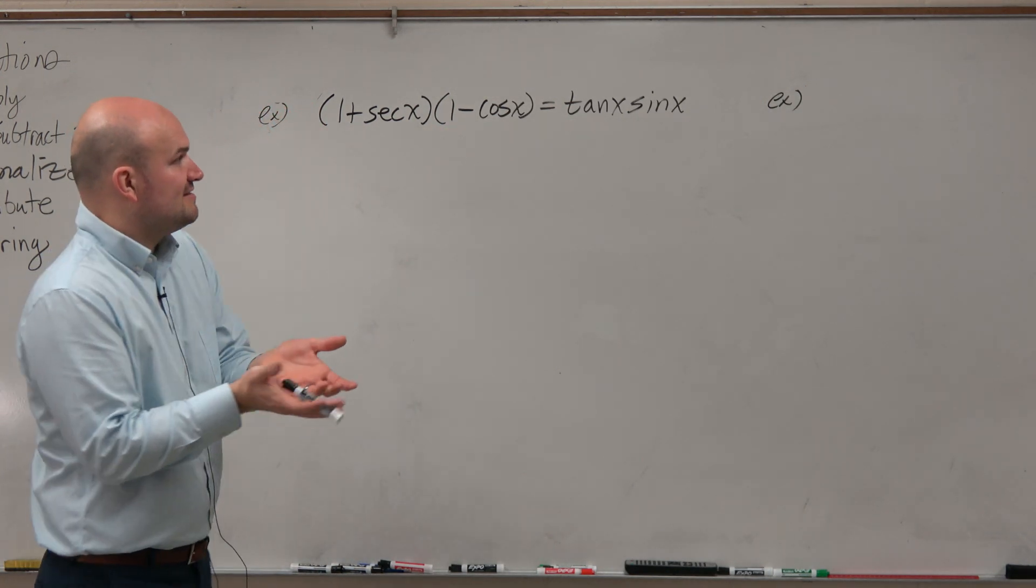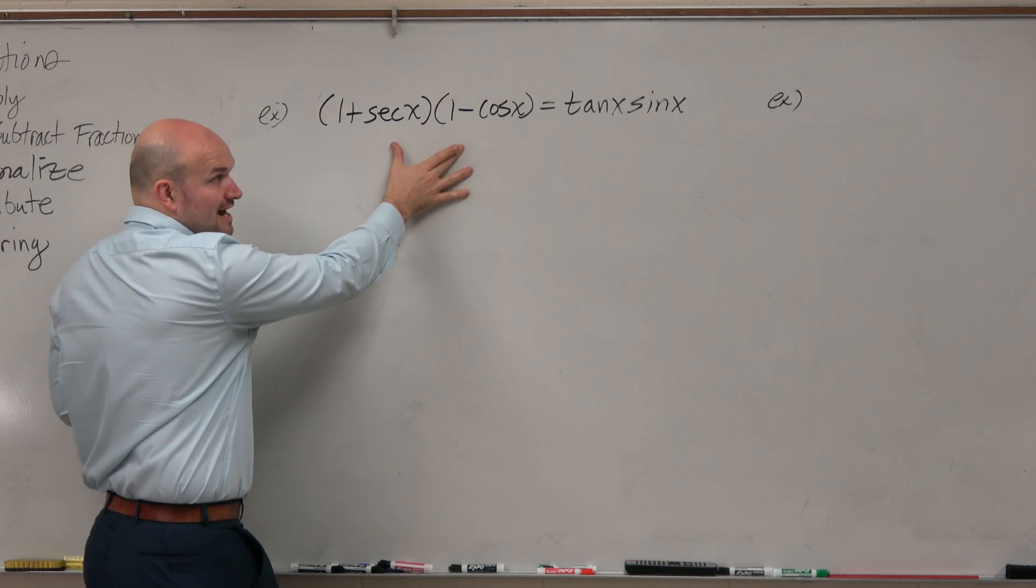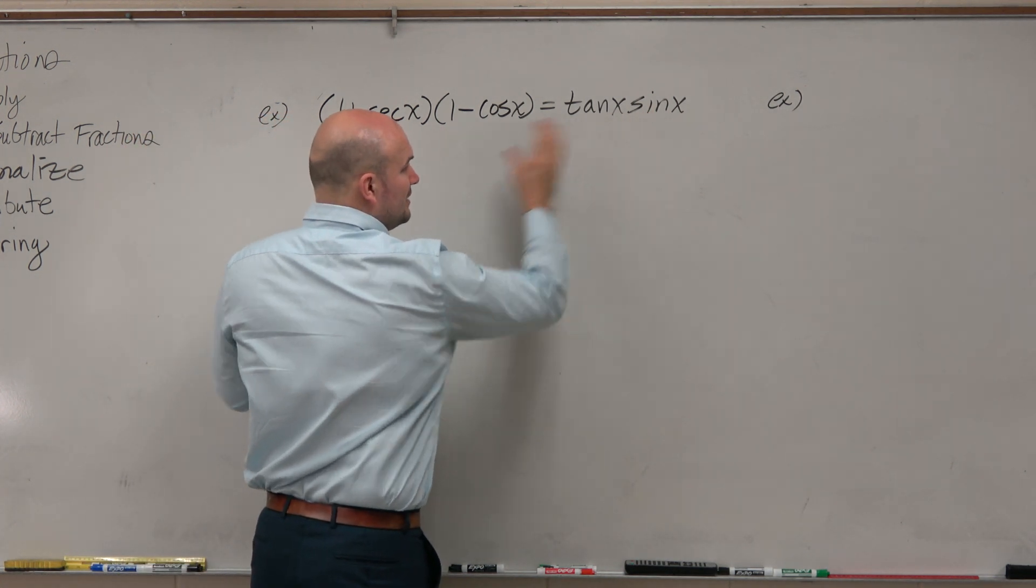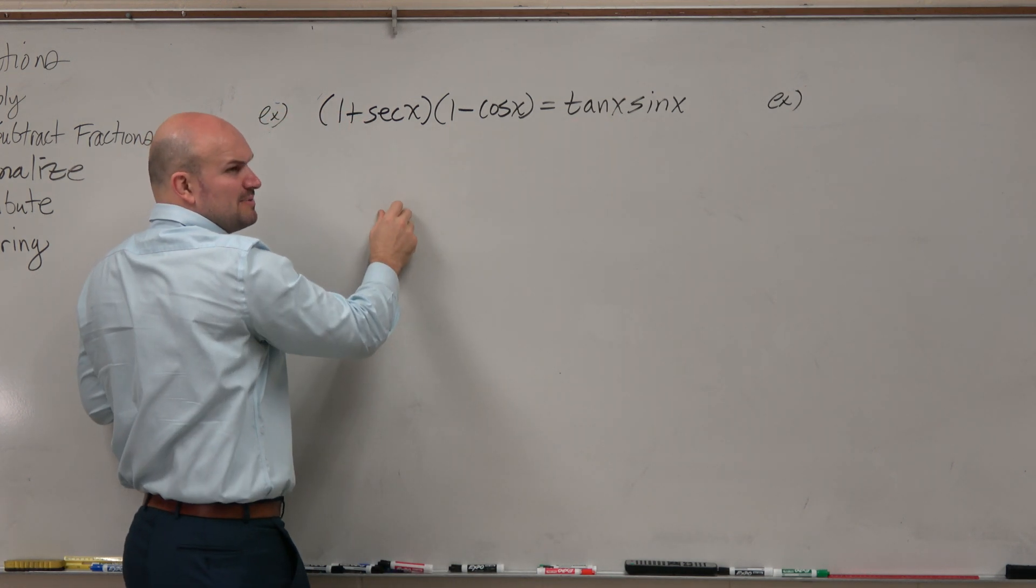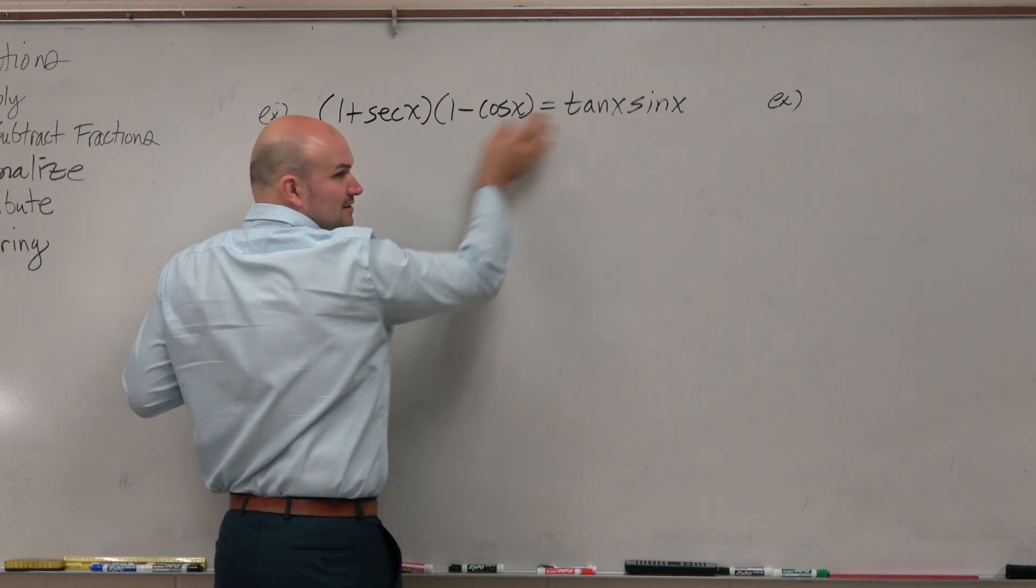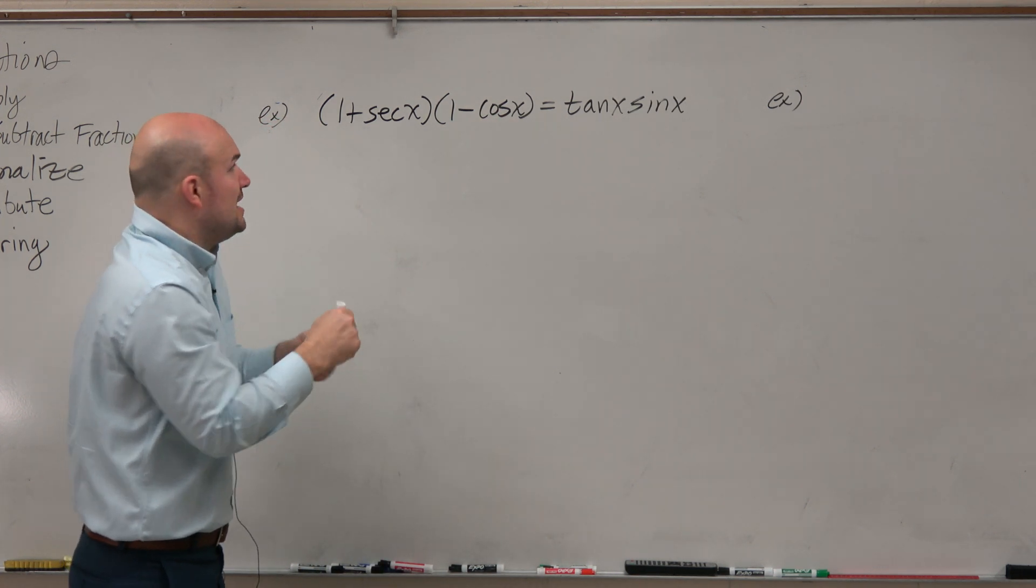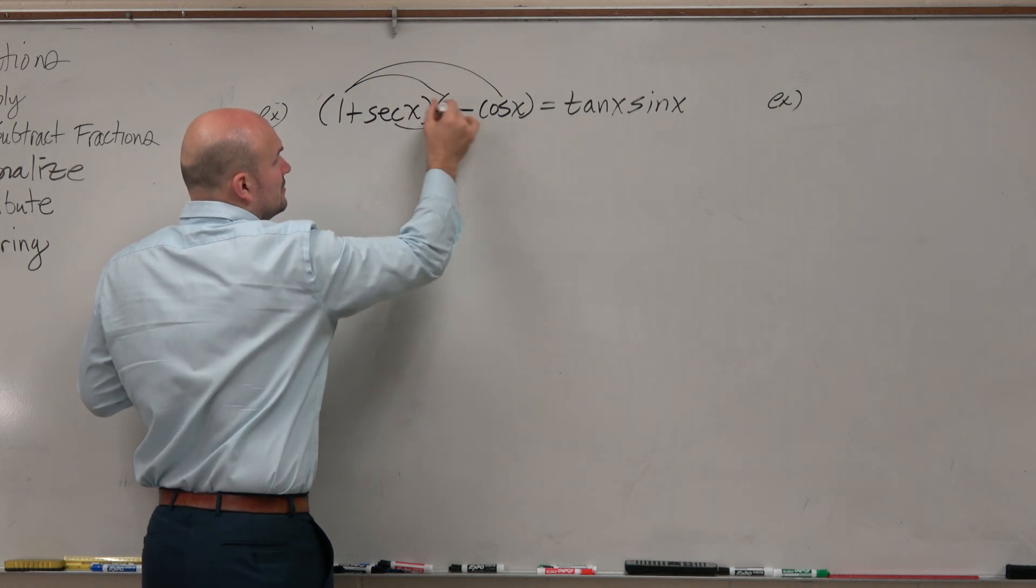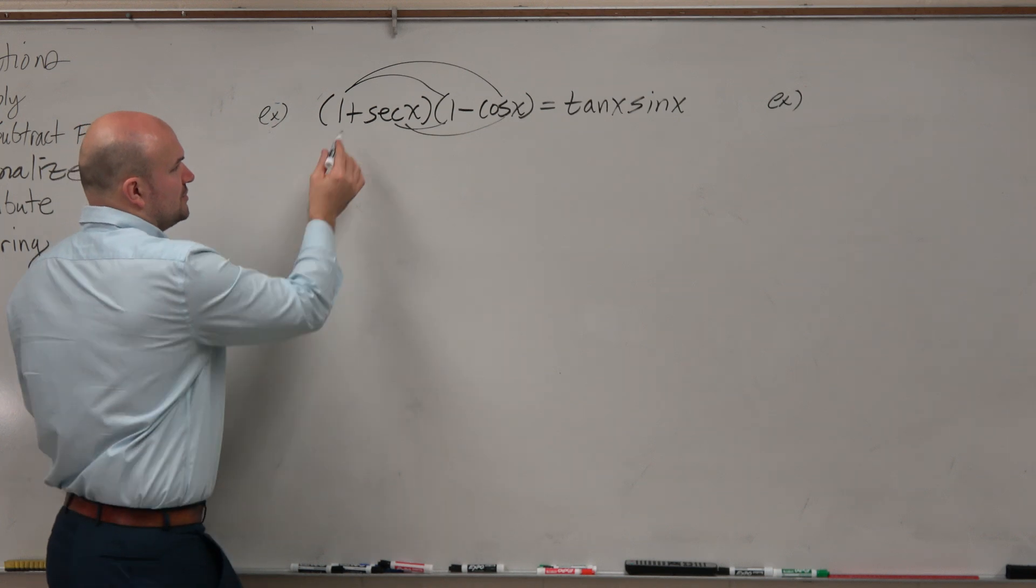And again, we have to pick a side. I'd say that it's probably easier to apply the operation on the left side than try to expand this so it looks like that. Wouldn't you guys agree that it's probably easier to make this look like that than that look like that? Because here, I kind of know what to do. I see a binomial times a binomial, I can FOIL. I can just expand that out.